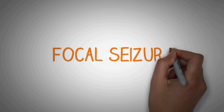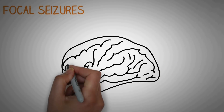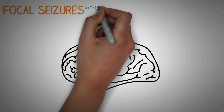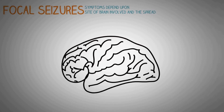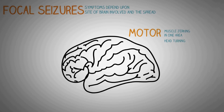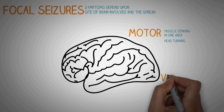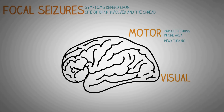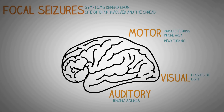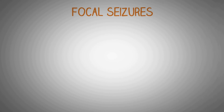Now let's talk about focal seizures. Focal seizures usually remain confined to a particular area in the brain, so the symptoms depend upon the site involved and the spread of the seizure. If the seizure activity remains confined to the motor area, symptoms are usually muscle jerking in one area of the body, and some patients exhibit turning of the head to one side. If focal seizures occur in the visual cortex, the symptoms are usually flashes of light perceived only by the patient. If they occur in the auditory cortex, the patient perceives ringing sounds in the ear. If they occur in the sensory area, they are perceived as false touch sensations.